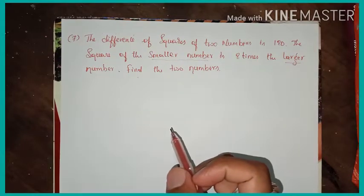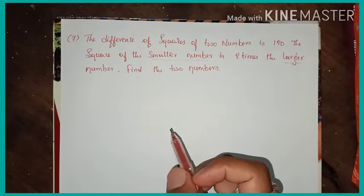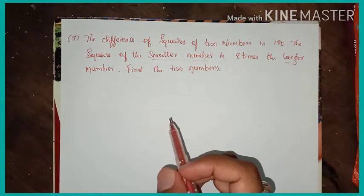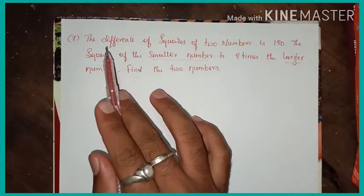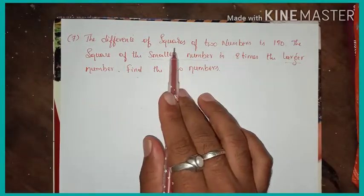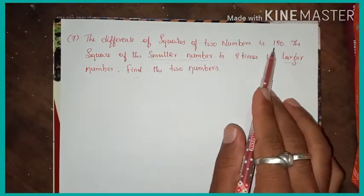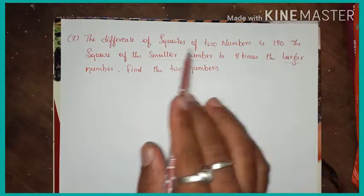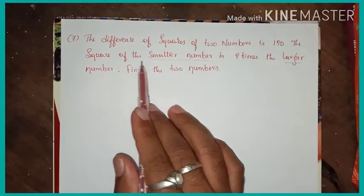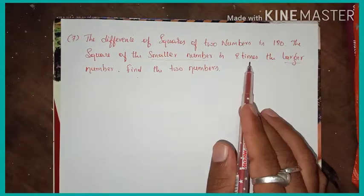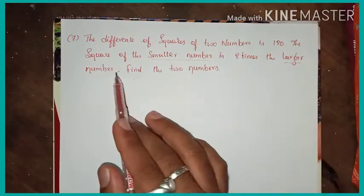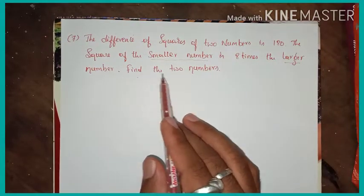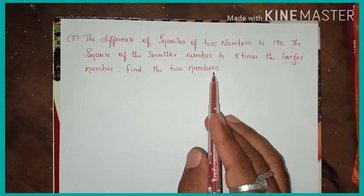A quadratic equation, 4.3 seventh main question. The difference of squares of two numbers is 180. The square of the smaller number is 8 times the larger number. Find the two numbers.